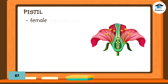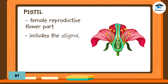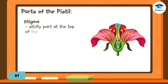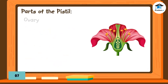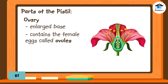Pistil is the female reproductive flower part found at the center of a flower. It includes the stigma, style, ovary, and ovules. The stigma is the sticky part at the top of the style which receives the pollen. The style is the narrow tube between the ovary and the stigma that helps pollen grains reach the ovary. The ovary is the enlarged base that contains the female eggs called ovules.